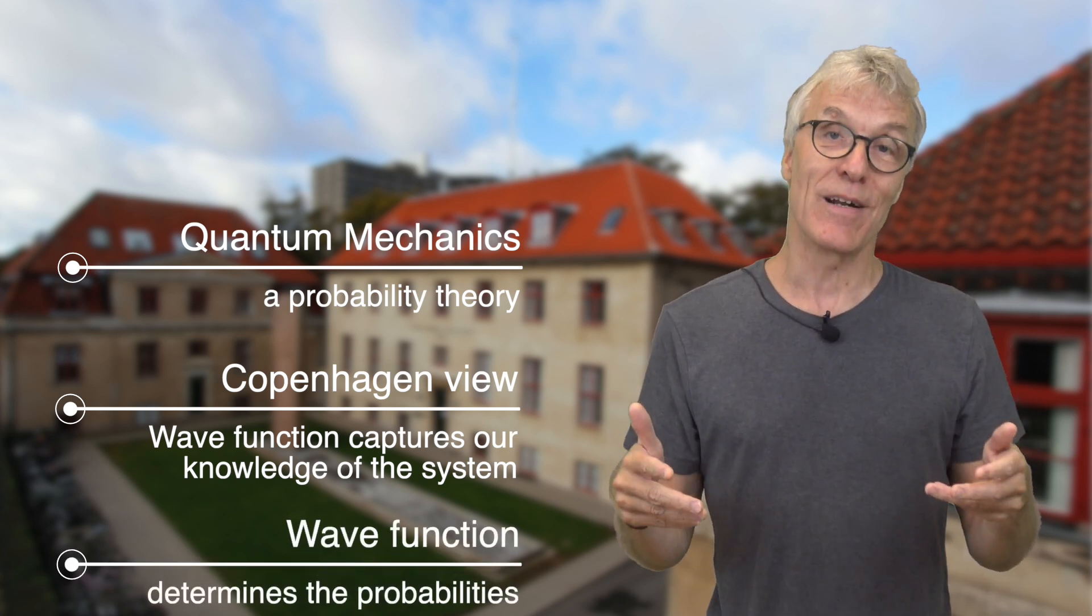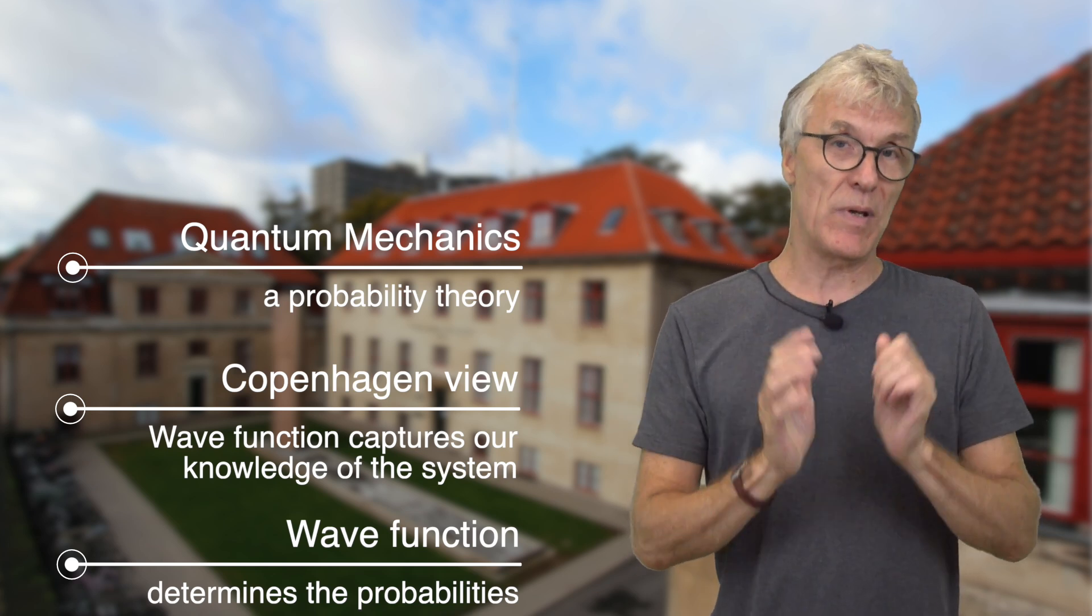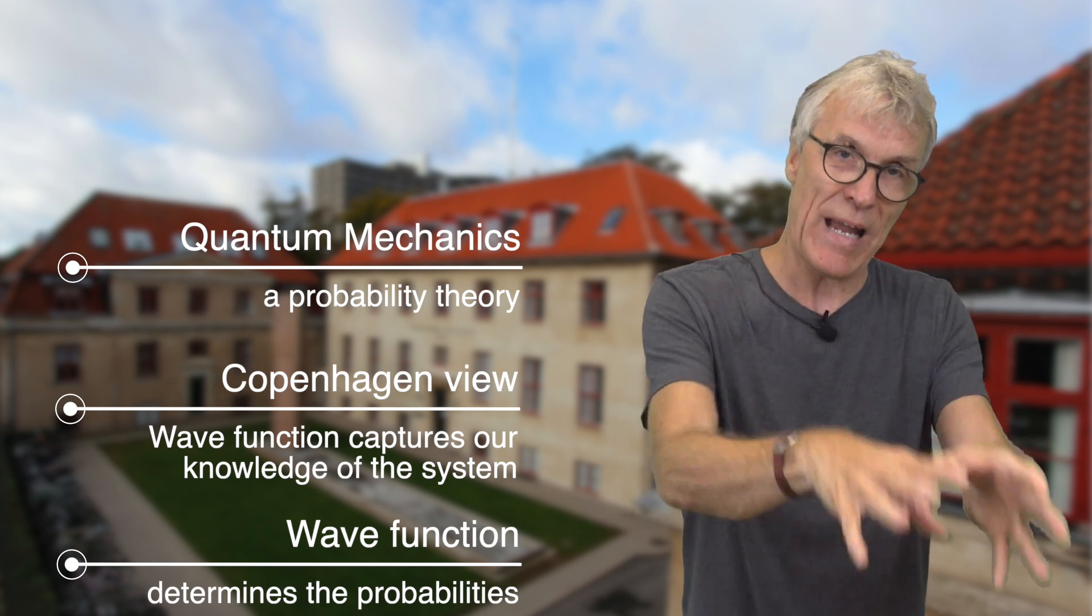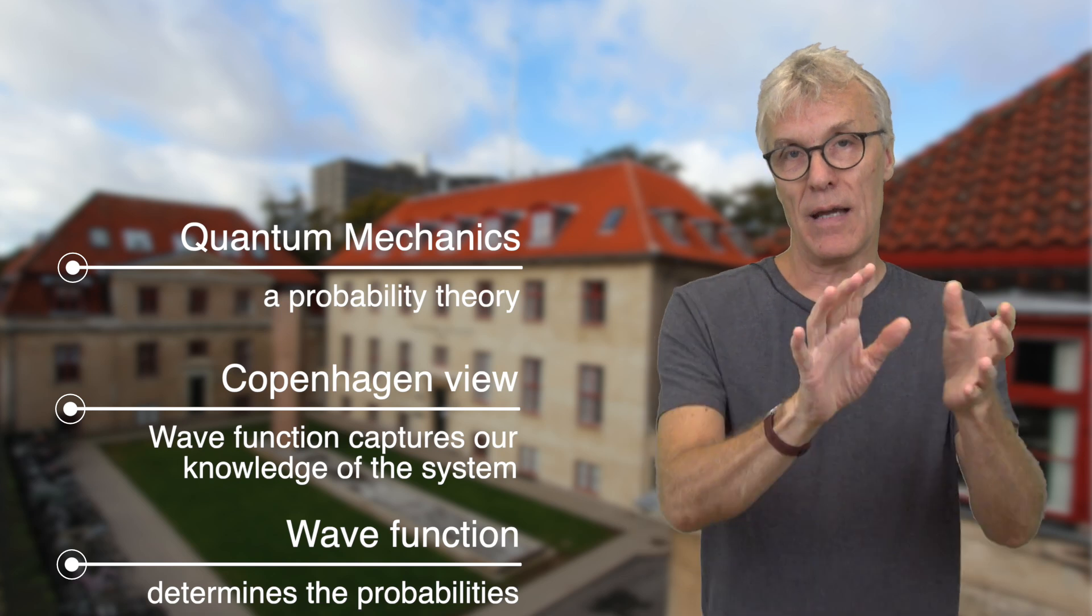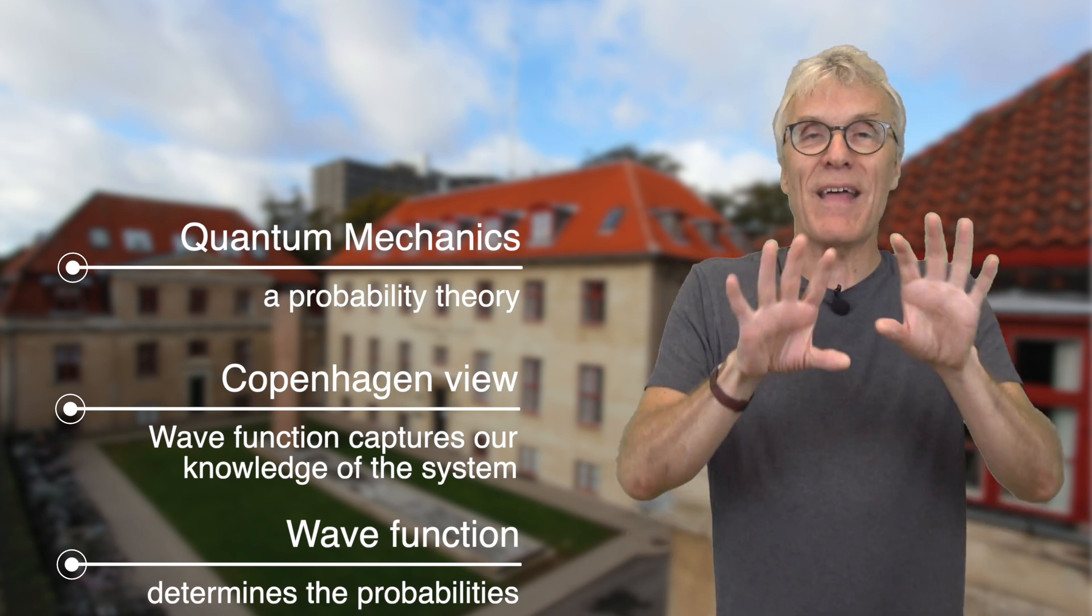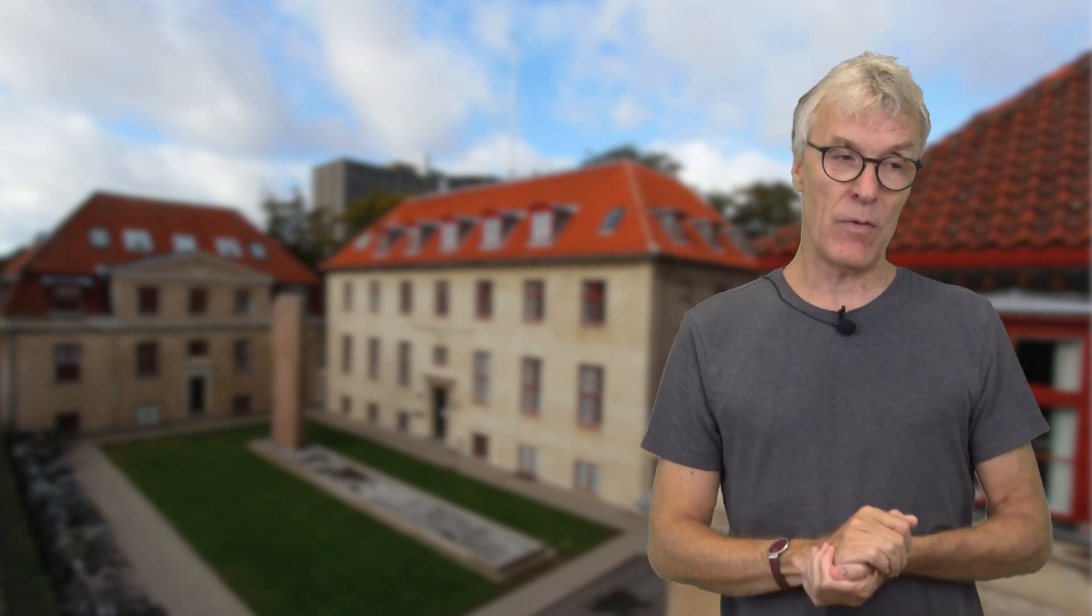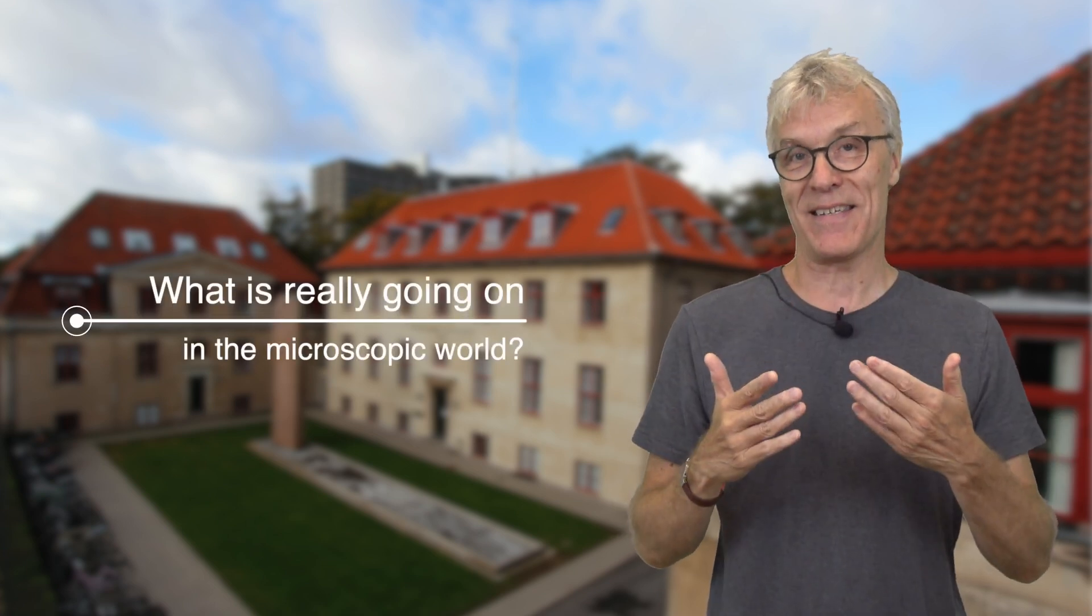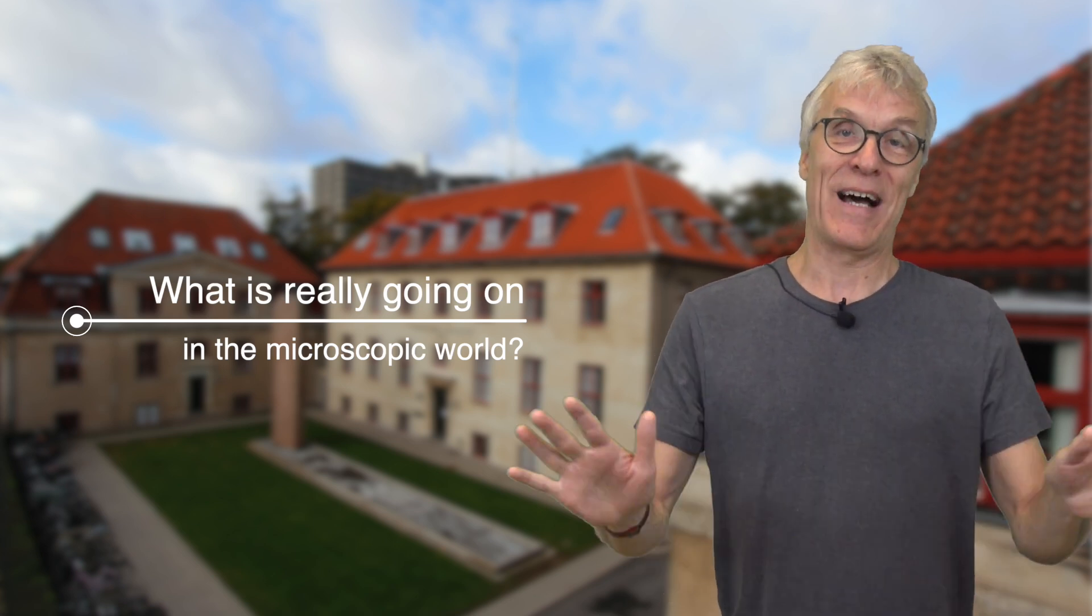But there's a very important missing link in the Copenhagen interpretation. And that is, there's also no explanation of what goes on in the microscopic world. Bohr, in fact, says we don't have a language for it. I don't want to make guessworks about it. I want to be able to explain every experiment. A theory that does that is enough for me, according to Bohr, and knowing that the particle is something particular when it does it will not add to that and therefore is not a necessary ingredient. You can also understand why physicists like Einstein and many, many others are not happy with that, because it may also be your instinct as a scientist that you want to understand what's going on.